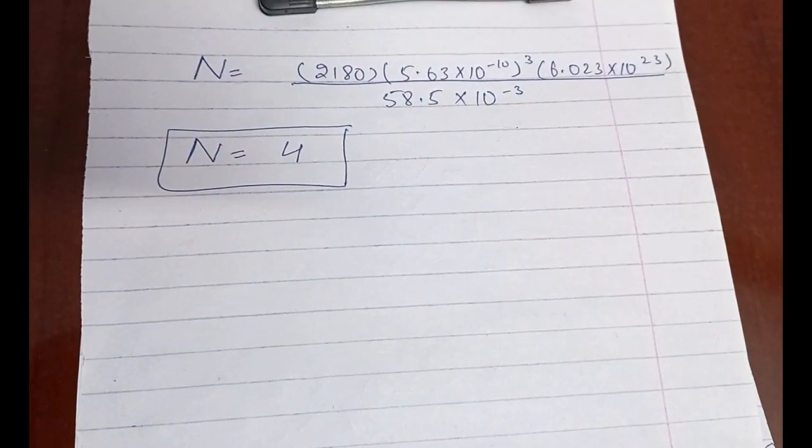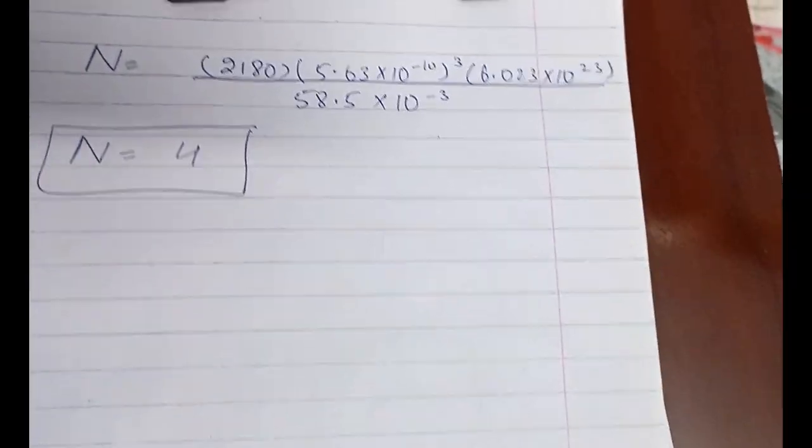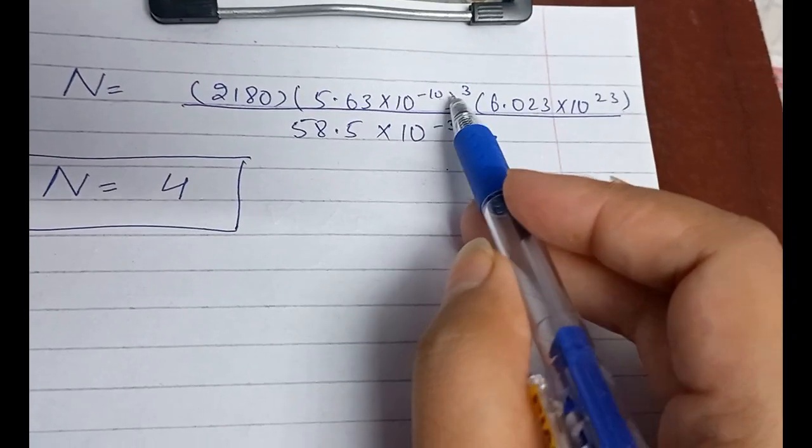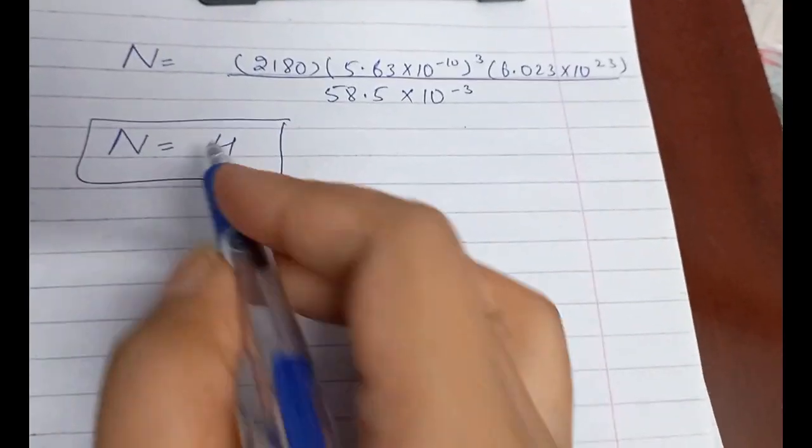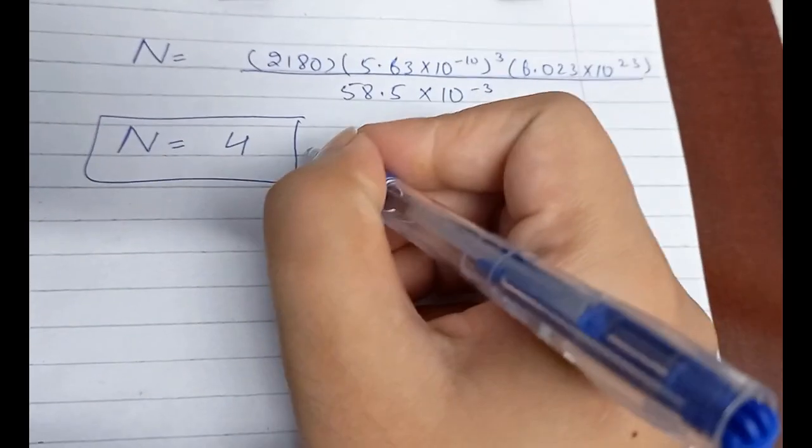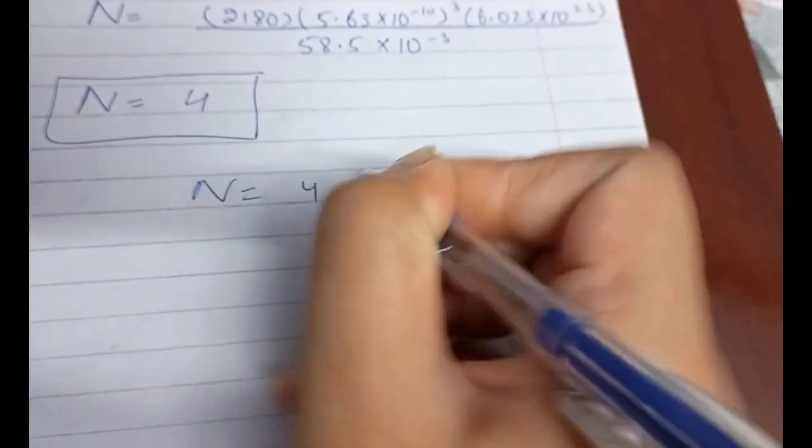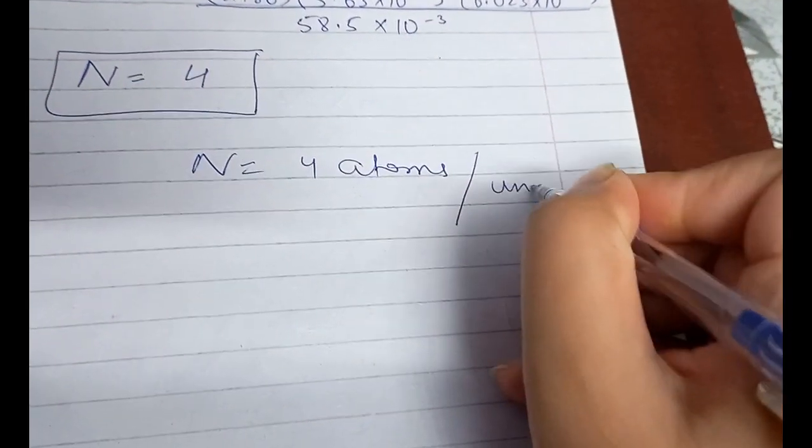I have used the calculator and the answer that I got is N equals 4. You can see it, it's a simple calculation. Don't forget that it's cube over this a value. This is the number and it has no unit because it's a number, or you can say N equals 4 atoms or molecules, NaCl molecules per unit cell. That is it, that's the answer.